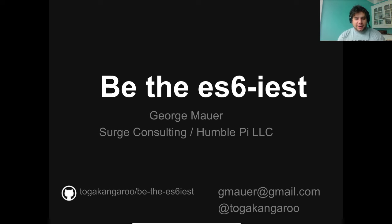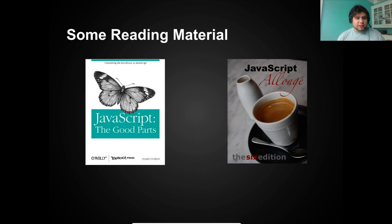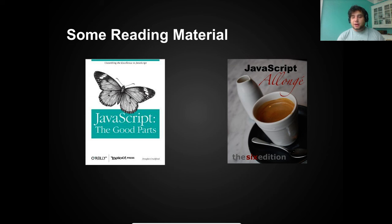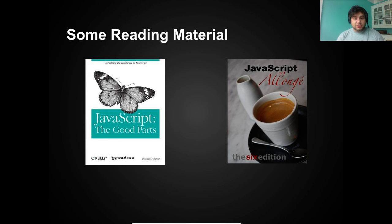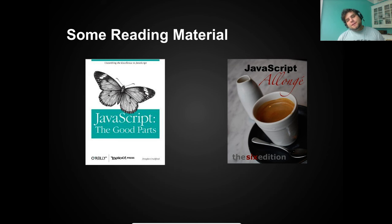Before we get started, a couple of things to recommend for reading material. If you're a JavaScript developer, 'JavaScript: The Good Parts' is your Bible. I personally don't agree with everything in it — I think a lot of it is a little too strict — but if you're a beginning JavaScript developer without strong opinions, following every piece of advice in there will serve you fine. I also recommend 'JavaScript Allongé' by Reginald Braithwaite, specifically the ES6 edition, which really gets back to the Lisp and functional language roots of JavaScript.